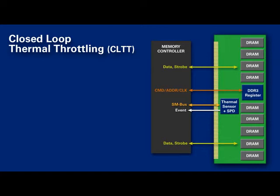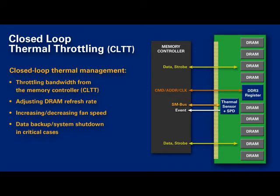Typically, the temperature is read over an interface — either I2C or SMBUS — or through an event-driven pin. At high temperatures, that reading is used to perform one of several actions: throttling bandwidth between the memory controller and the DRAM to reduce temperature (closed-loop thermal throttling), adjusting the DRAM refresh rate to maintain data integrity, increasing or decreasing fan speed, or triggering a shutdown or data backup function at critical temperatures.